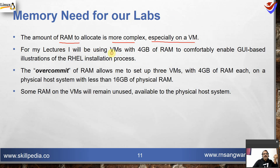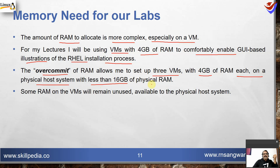For these lectures, I will be using a VM with 4 GB of RAM to comfortably enable GUI illustrations for the RHEL installation processes. The over-commit of RAM allows me to set up three virtual machines with 4 GB of RAM each on the physical host with less than 16 GB of physical RAM. Some RAM on the virtual machines will remain unused, available to the physical host system.